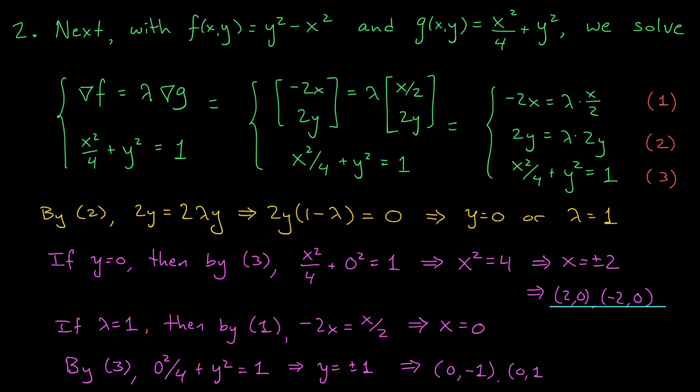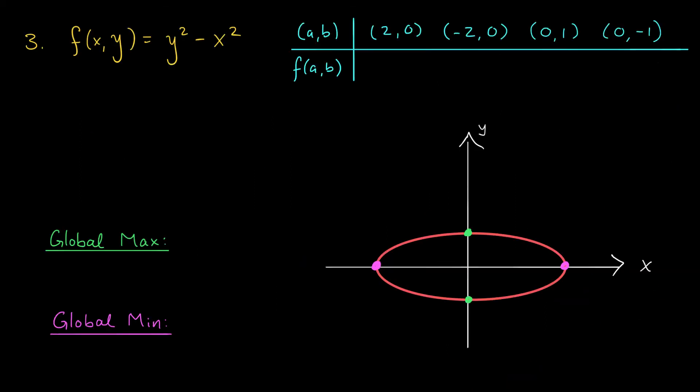For the last step of our problem, we're going to test the values of our function at each of these extreme points. In step 2, we found four extreme points of our function along this elliptical constraint curve. We know that these are the only possible locations for the global max or min subject to this constraint. So for the final step of our problem, we're simply going to plug these points in and take the largest and smallest values.